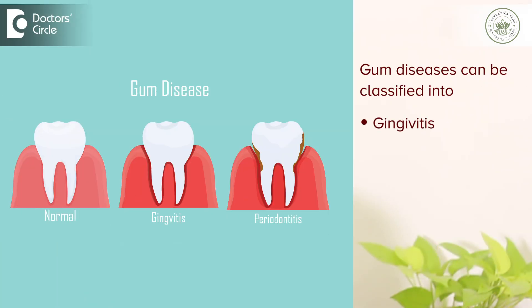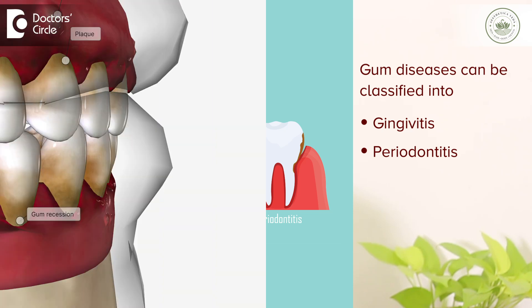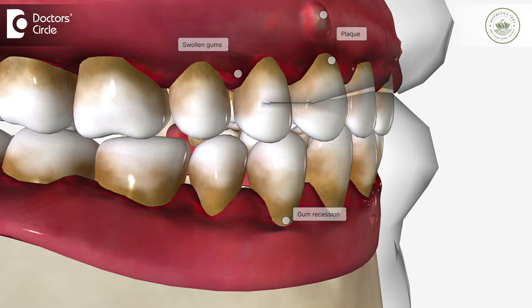Gum diseases can be broadly classified as gingivitis, which is the milder form, and periodontitis, which is the severe form. The main cause of gum diseases would be plaque along with the microorganisms they harbour.